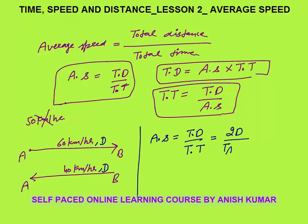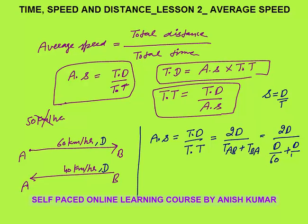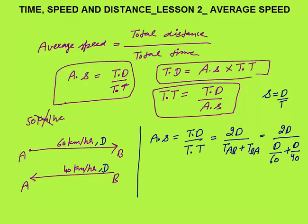Total time equals time from A to B plus time from B to A. Using the formula time = distance / speed: from A to B we cover distance d at 60 km/h, and from B to A we cover distance d at 40 km/h. So average speed = 2d / (d/60 + d/40). Importantly, d cancels out from both numerator and denominator, giving us 2 / (1/60 + 1/40).